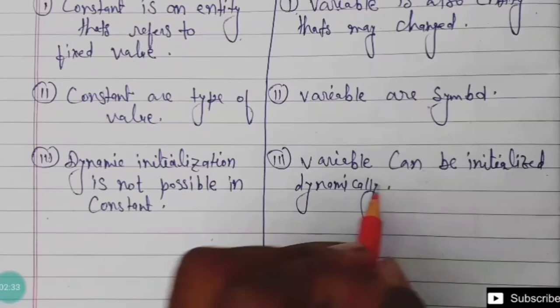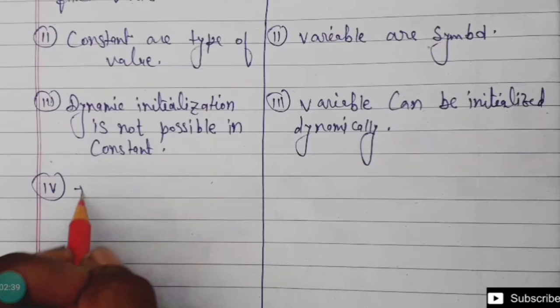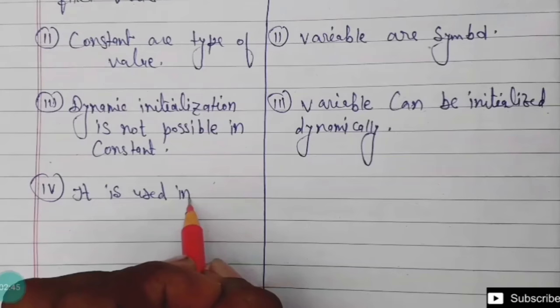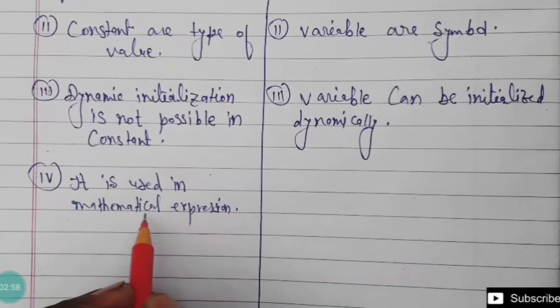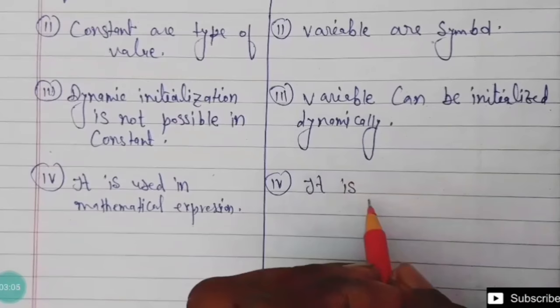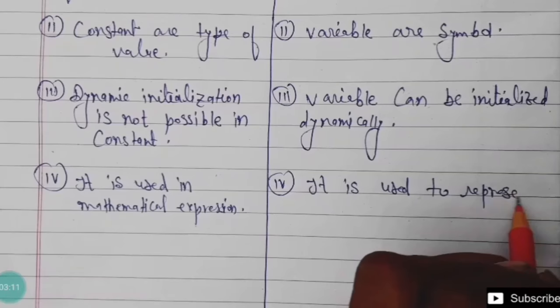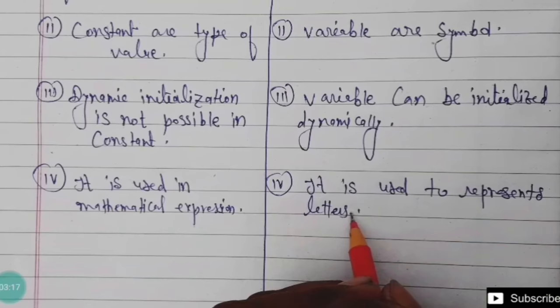Fourth point: constants are used in mathematical expressions as values — for example, numbers. Variables are used to represent letters in mathematical expressions.